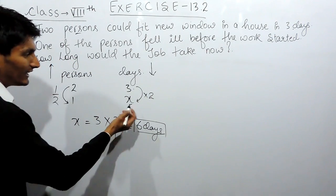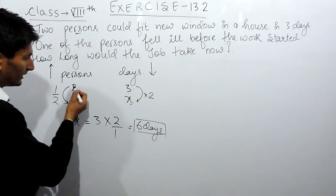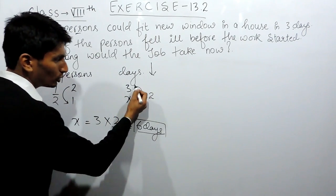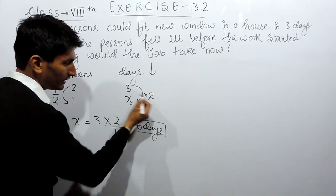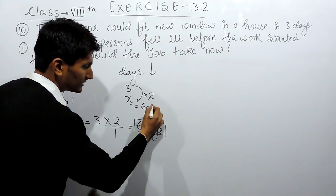So by this you can directly find out the answer. Here the number of persons get halved, so the number of days must be twice. So 3 into 2 must be 6 days.